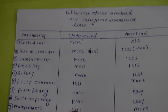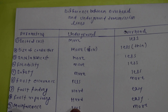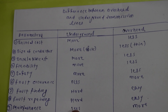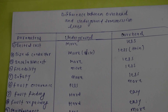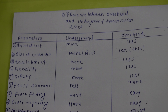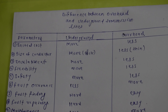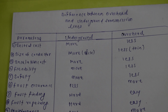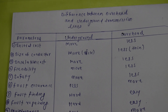The second point is the size of the conductor. The size of the conductor in underground may be more than overhead. The wires used underground need more protection because there is no external weight on them, so their strength needs to be increased.